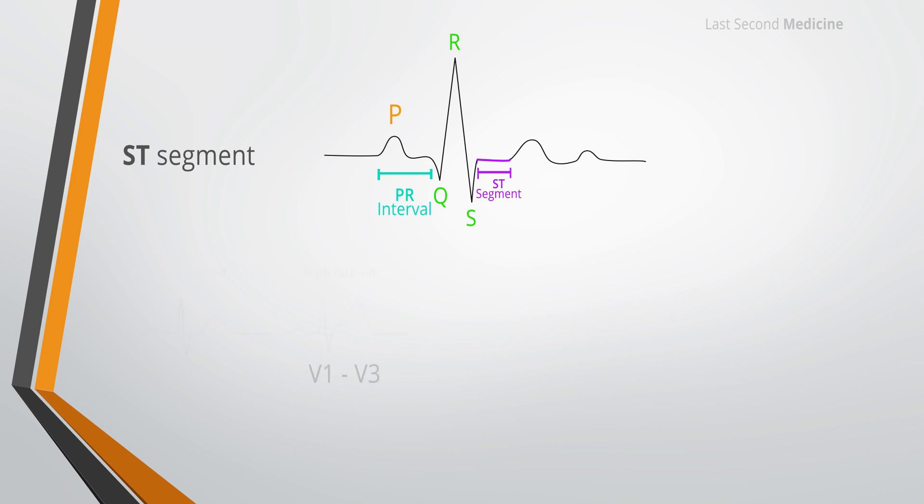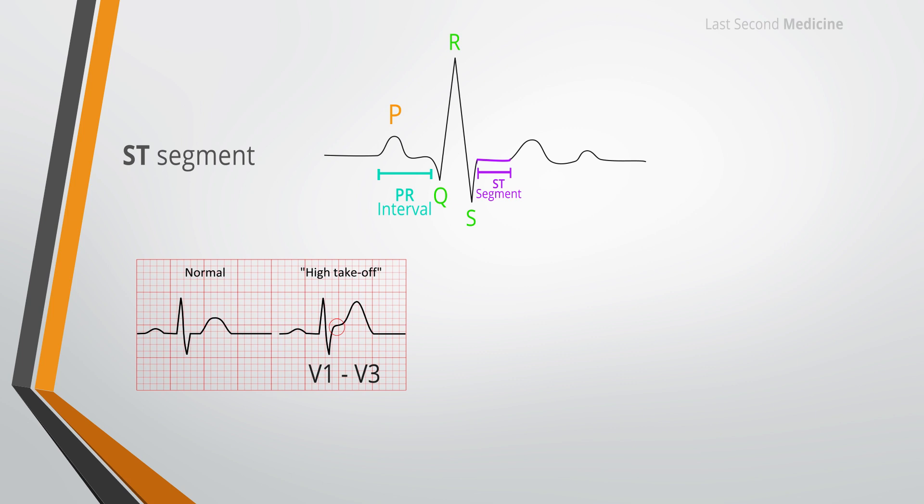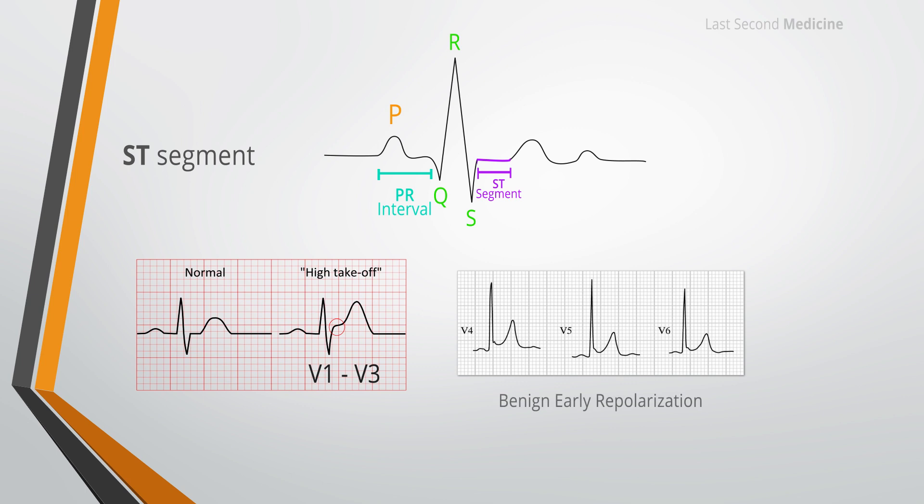In lead V1 to V3, the rapidly ascending S wave merges directly with the T wave, making the J point indistinct and the ST segment difficult to identify. This produces elevation of the ST segment and is known as high takeoff. Non-pathological elevation of the ST segment is also associated with benign early repolarization, which is particularly common in young men, athletes and black people.